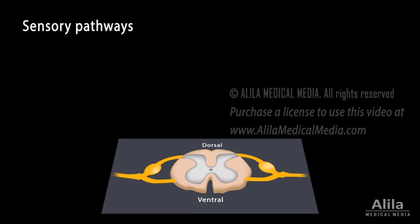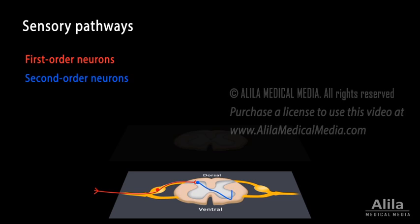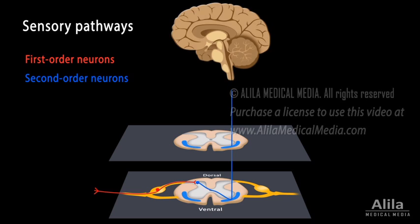A sensory pathway typically involves three neurons. First-order neurons detect stimuli and transmit signals to the spinal cord. The axons of these neurons form sensory fibers that enter the cord via the dorsal root of the spinal nerve. Inside the cord, first-order neurons synapse with second-order neurons, which ascend a specific tract to the brainstem or further up to the thalamus. In some pathways, first-order neurons ascend the tract to the brainstem, where they synapse with second-order neurons, which continue to the thalamus.